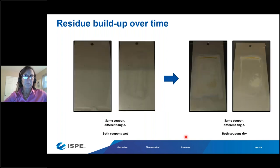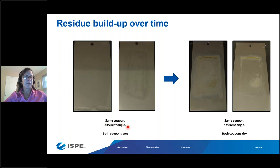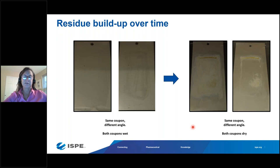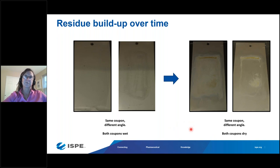When inspecting equipment for visual cleanliness, it is important to look under both wet and dry conditions, but especially dry. The same coupon under different angles when wet may show the residue from one angle but not the other, whereas when dry the residue is visible under both angles. Residues like titanium dioxide and thin mineral films are very difficult to see when wet but are clearly visible once the equipment is dry. The recommendation is to inspect equipment under dry conditions.